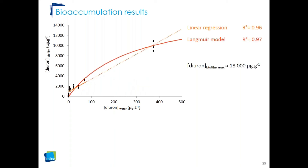The two previously presented models were fitted. In orange is the linear regression model with a regression coefficient of 0.96, and in red is the Langmuir model with a regression coefficient of 0.97. The maximum accumulation in the biofilm calculated by the Langmuir model is around 18,000 micrograms per gram. At this stage, it is not possible to determine which model is most appropriate to characterize diuron bioaccumulation, as the regression coefficients are very close to one another.